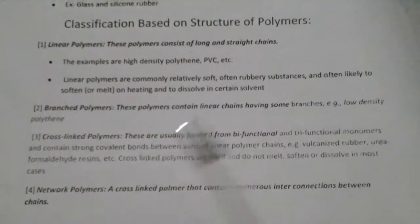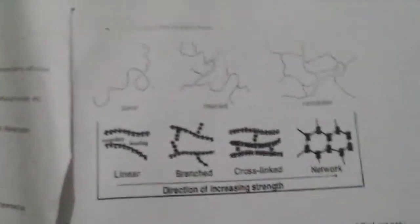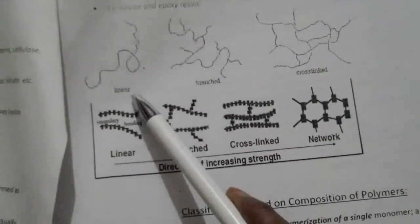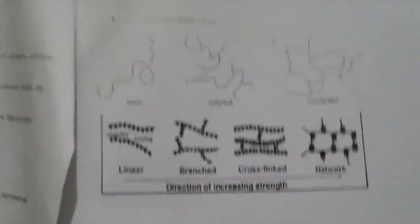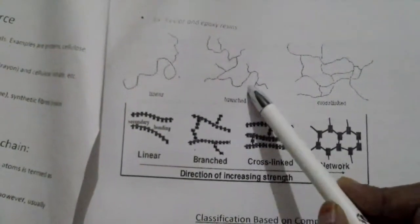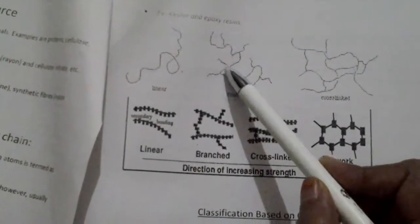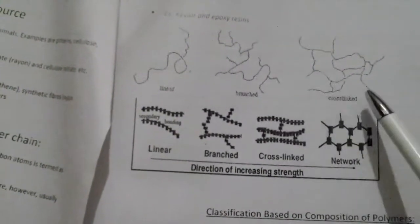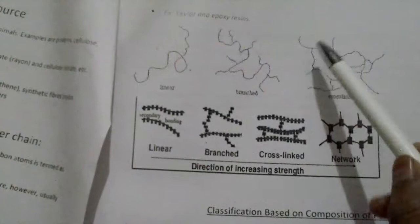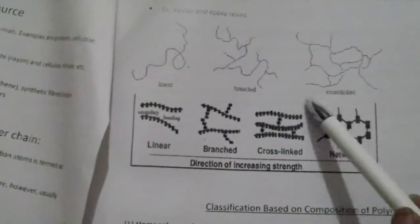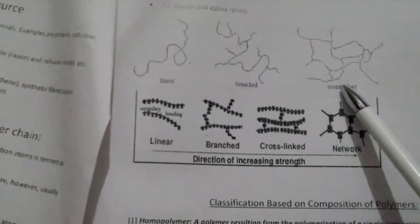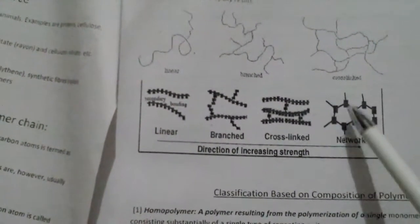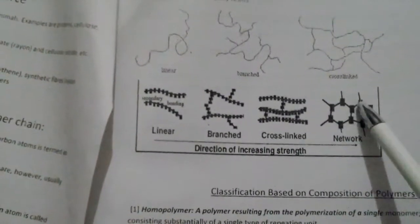We will see these in pictorial form. The long straight chain comes under linear polymers. Linear polymers with some branches come under branched polymers. Cross-linked polymers may be bifunctional or trifunctional. And the last one, network polymers, are cross-linked polymers with interconnections between them.